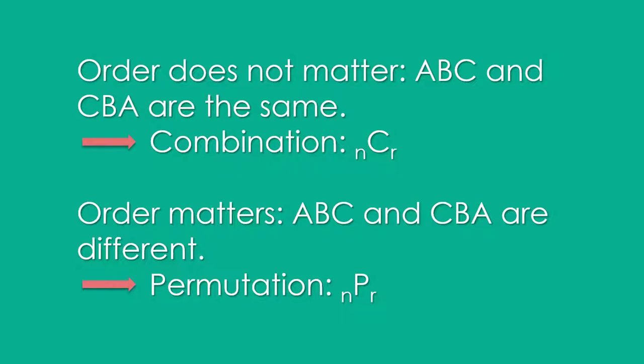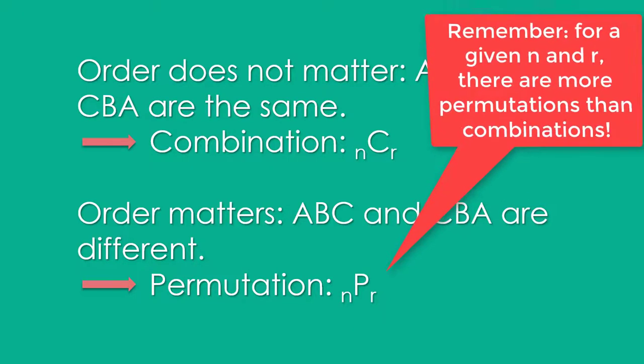If order does matter, ABC and CBA are different, then you must use permutation, nPr.